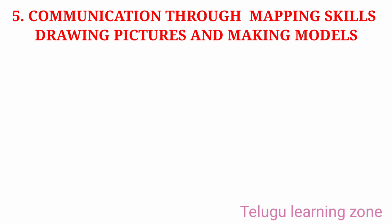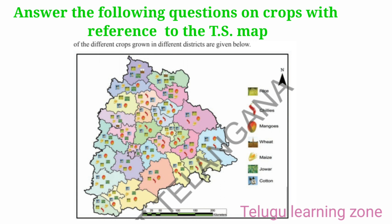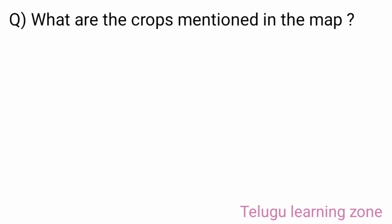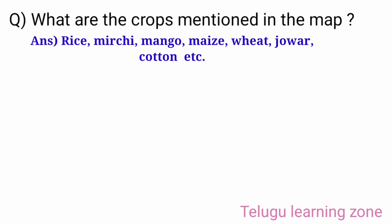Communication through mapping skills, drawing pictures and making models. Answer the following questions on crops with reference to the Telangana state map. Question: What are the crops mentioned in the map? Answer: Rice, Mirchi, Mango, Maize, Wheat, Jowar, Cotton etc.